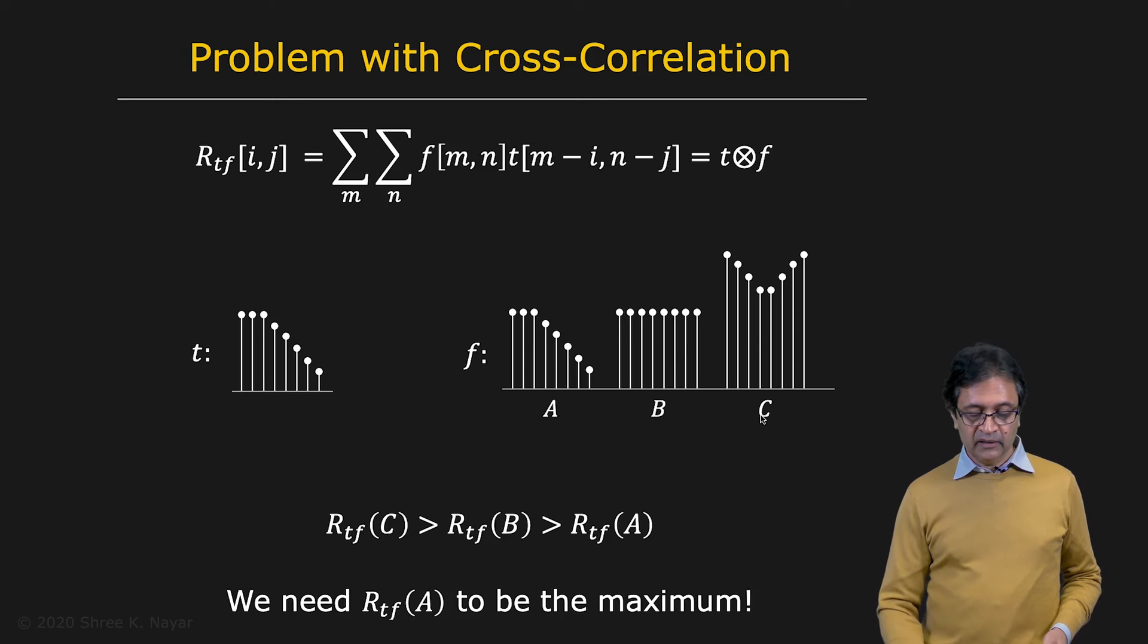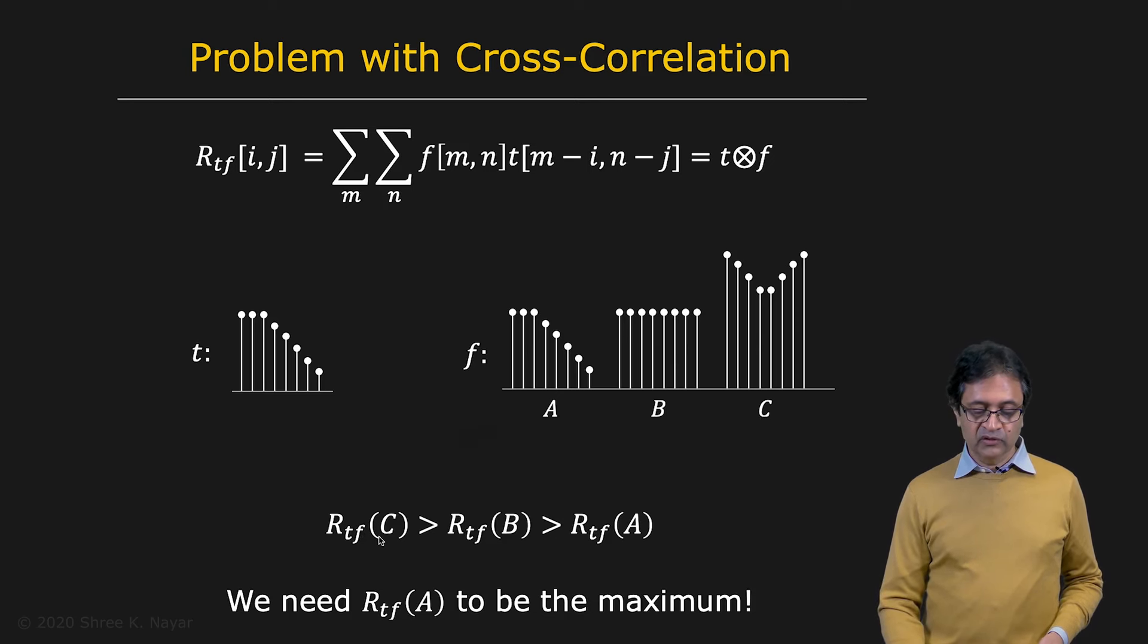Well, it turns out that the cross correlation is going to be the highest at C. And then the next highest is going to be B. And finally, the desired output A. Why is that? And that's because these values here in C and B are much larger than the value that you have within A.